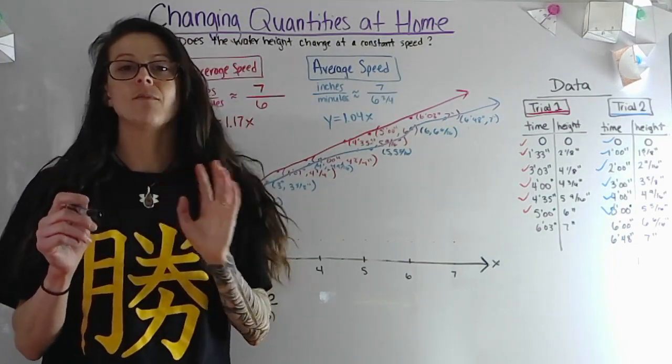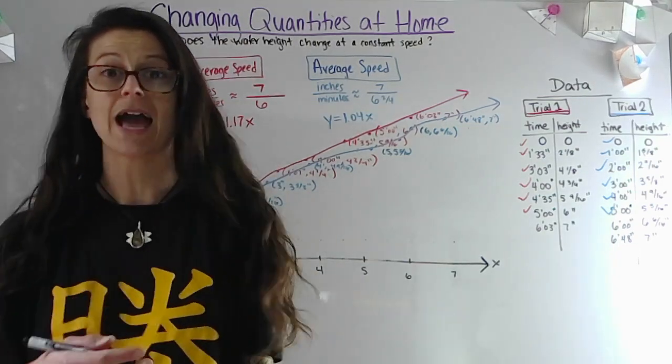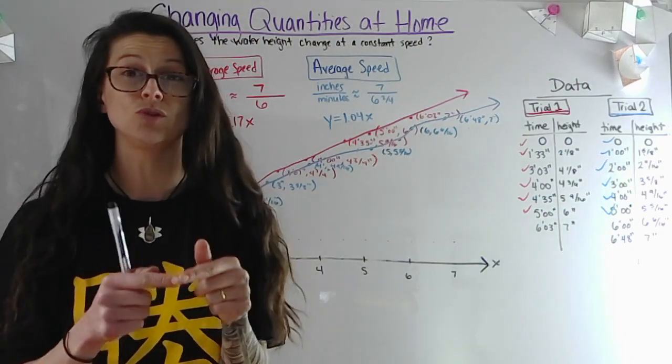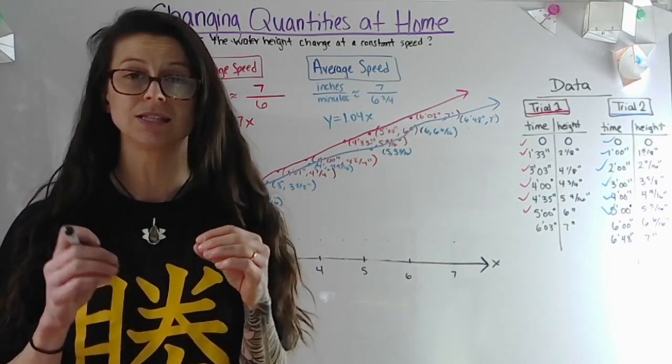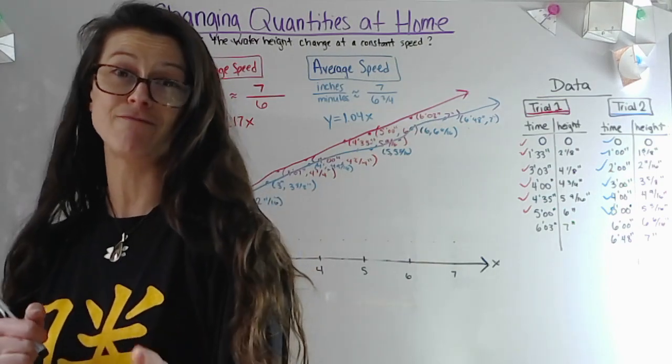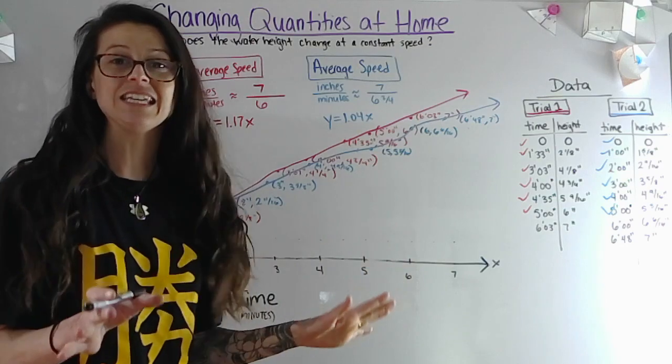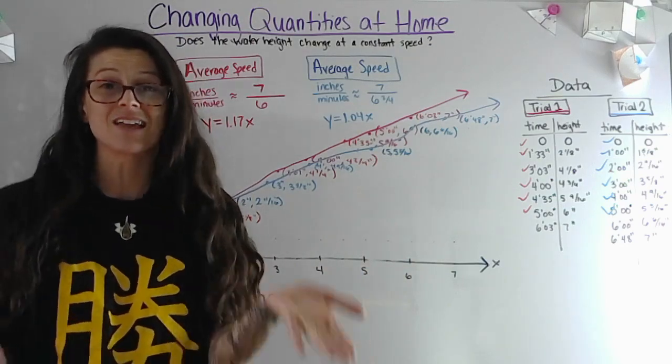Stay tuned, I'm going to use a graphing utility, graphing software, to show you what that would look like more precisely and then we can look at a line of best fit. But for this, just to get an idea, I would say that my sink fills at a constant rate of speed, constant rate of change.